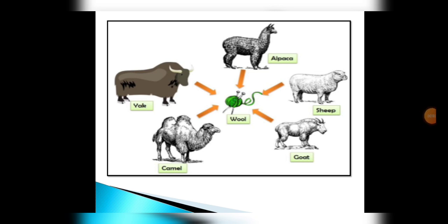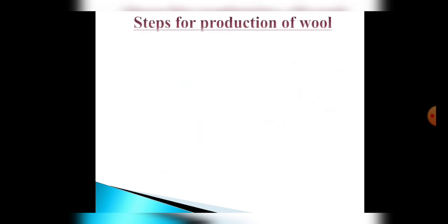Hello students and welcome back. This is part three of the fiber to fabric chapter. In the previous two videos we have discussed about the history of wool and wool yielding animals. Now we will discuss about those steps by which fleece of sheep gets converted into fabric.